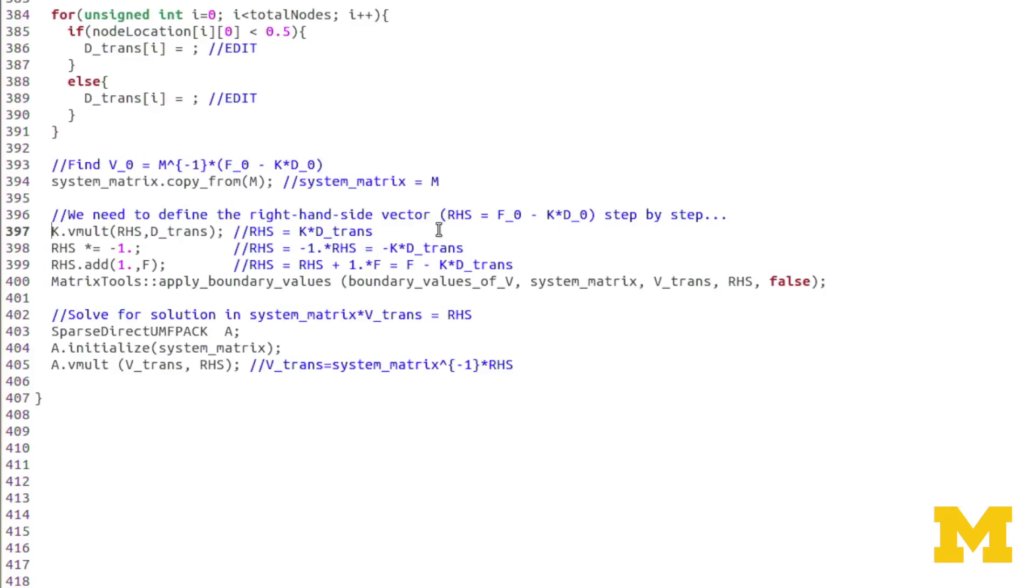So at this point, RHS is equal to minus K times D trans, or minus K times D naught. And then finally, even though F is equal to zero in this case, I've included it for generality. I do RHS dot add one times F. One is the scalar coefficient to F. And so that takes RHS and adds onto it one times F, which now gives us a right hand side vector of F minus K times D trans, or F minus K times D naught. So now my right hand side vector is set up. In this case, I'm only doing a matrix inversion on M, so I don't have to do any matrix operations there. But I did, up here, copy M into the system matrix. So that's the same as saying system matrix equals M.